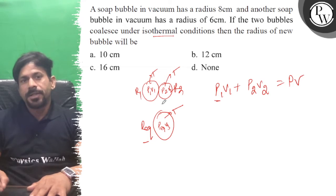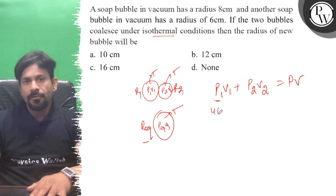So what can we write? p1 is equal to 4T by r1, and v1 into 4 by 3 pi r1 cube.